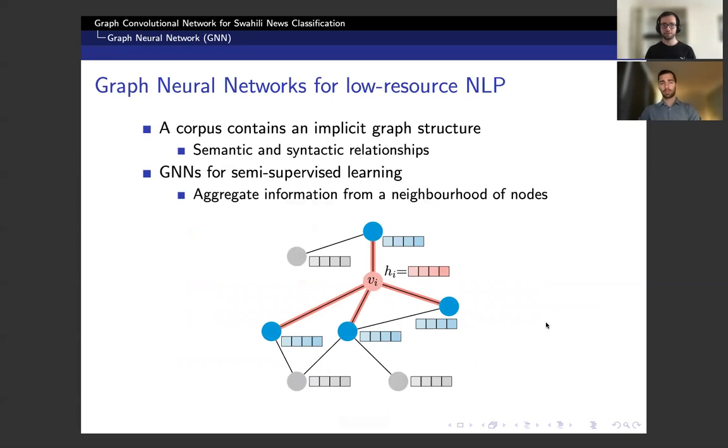Now that we have our benchmarks, we can compare them to a graph neural network. Graph neural networks are applicable here because you can think of a corpus as containing an implicit graph structure based on semantic and syntactic relationships, both within a document or between documents. GNNs are really good at semi-supervised learning because they aggregate information from a neighborhood of nodes to generate rich high-level feature representations.